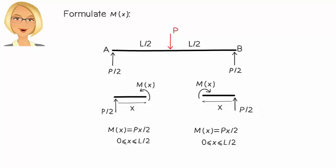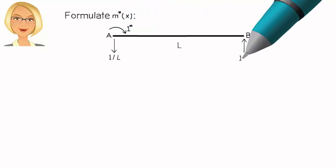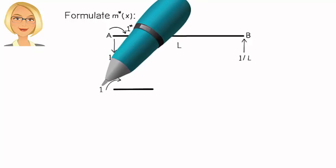To determine M*x, we place a virtual unit moment at A in the clockwise direction like this. Then we can come up with the beam's bending moment equation like this.